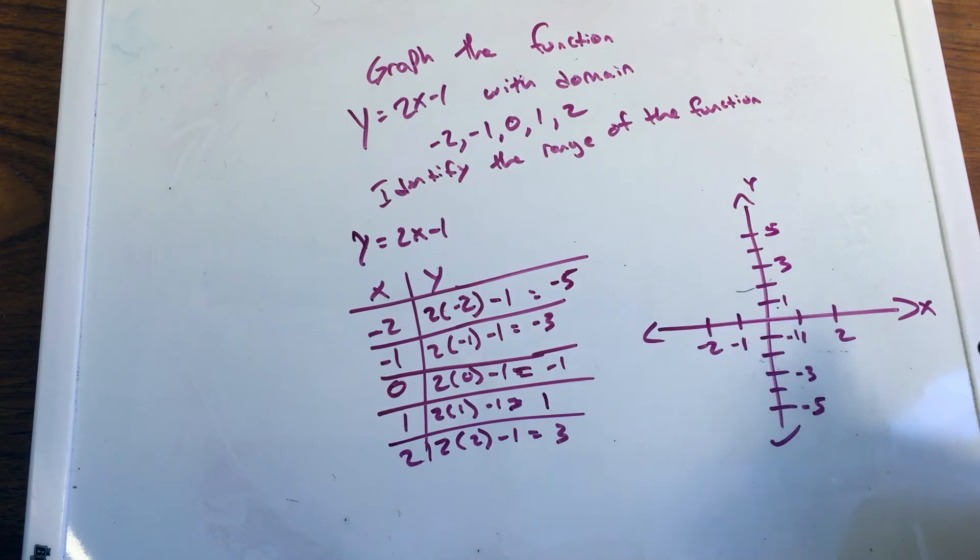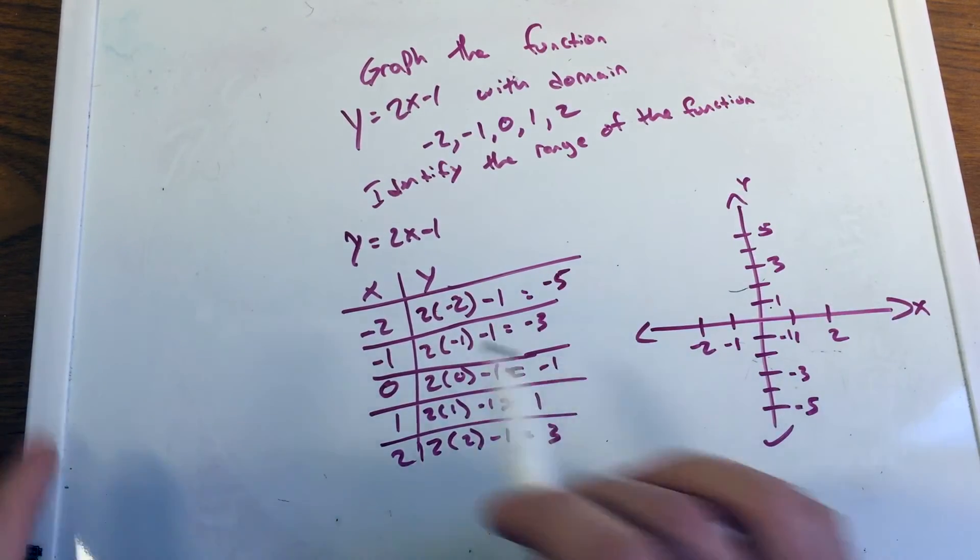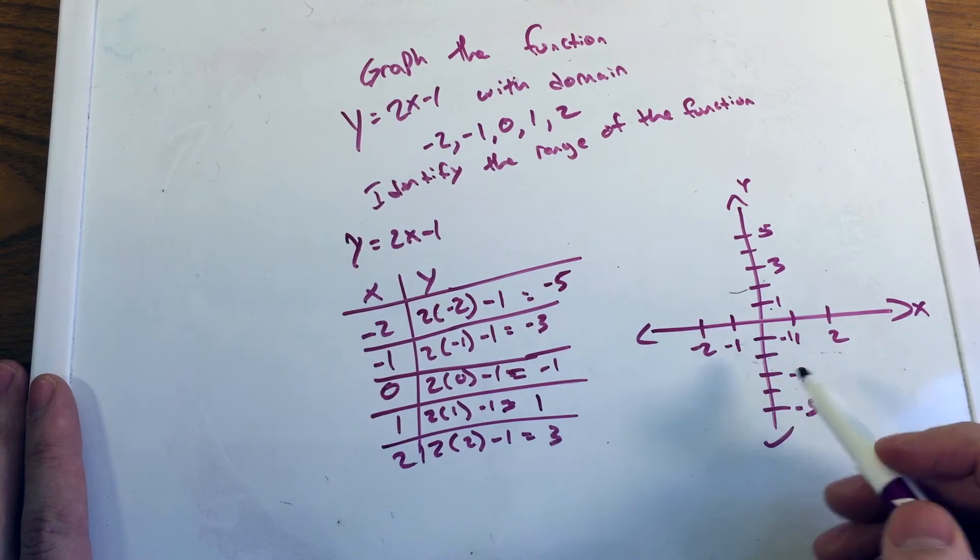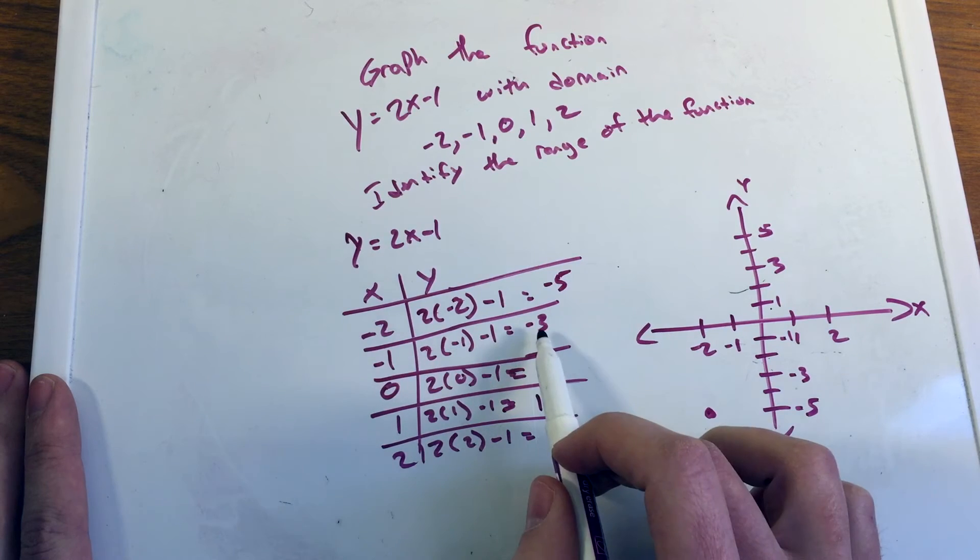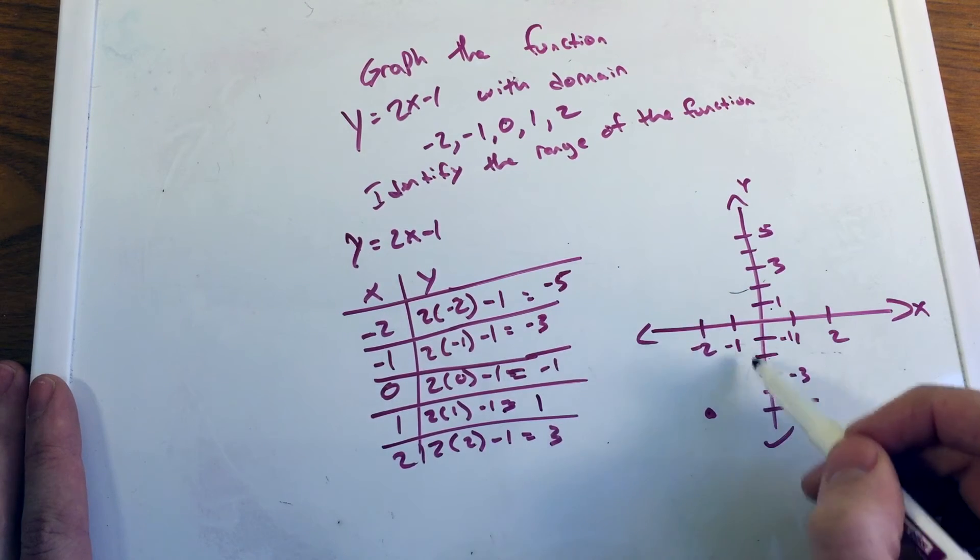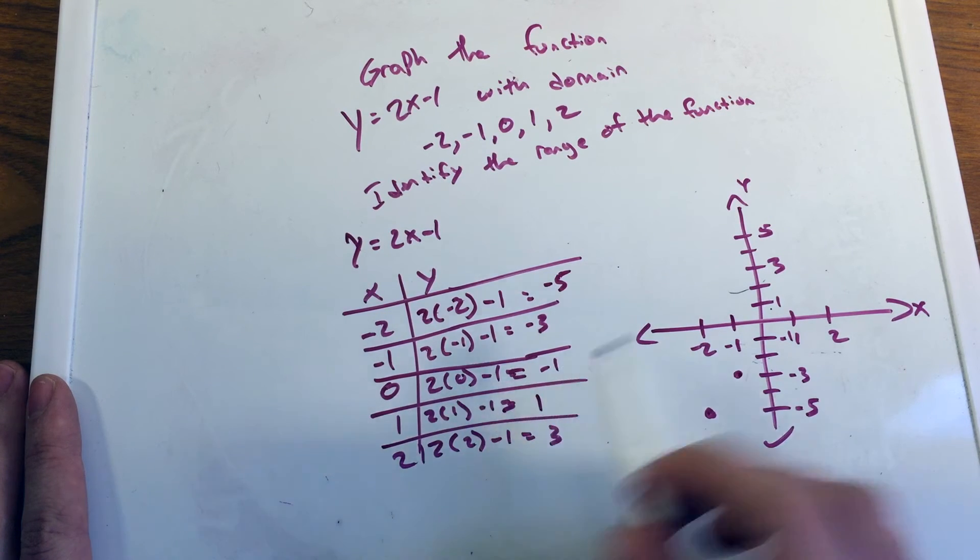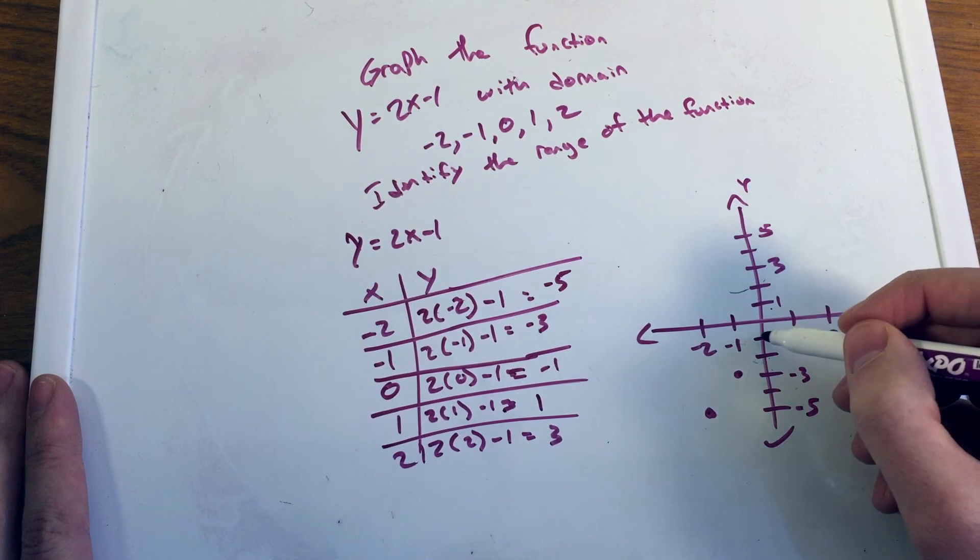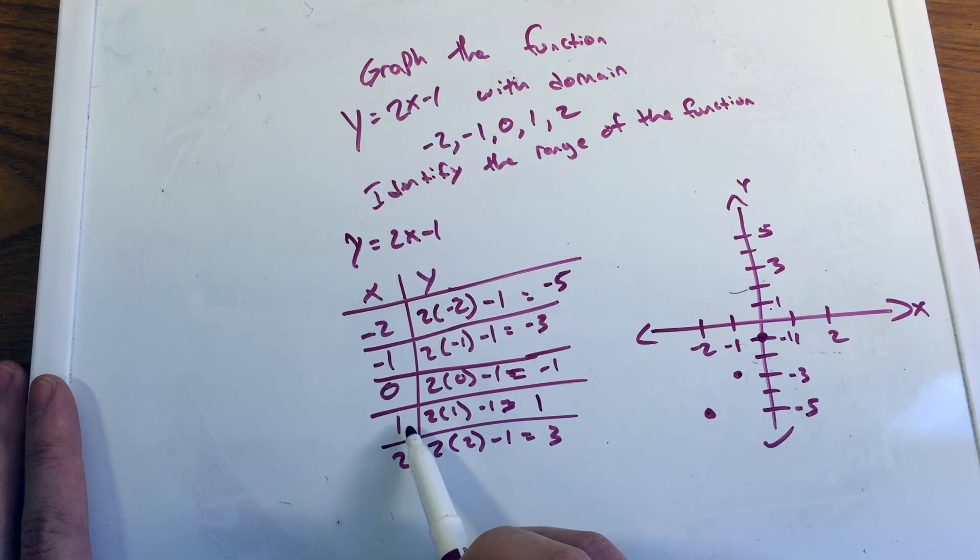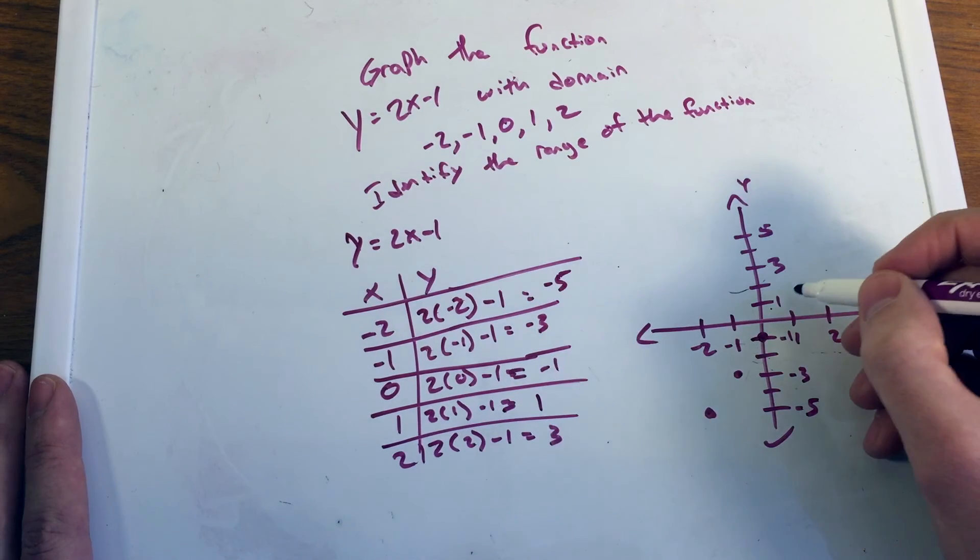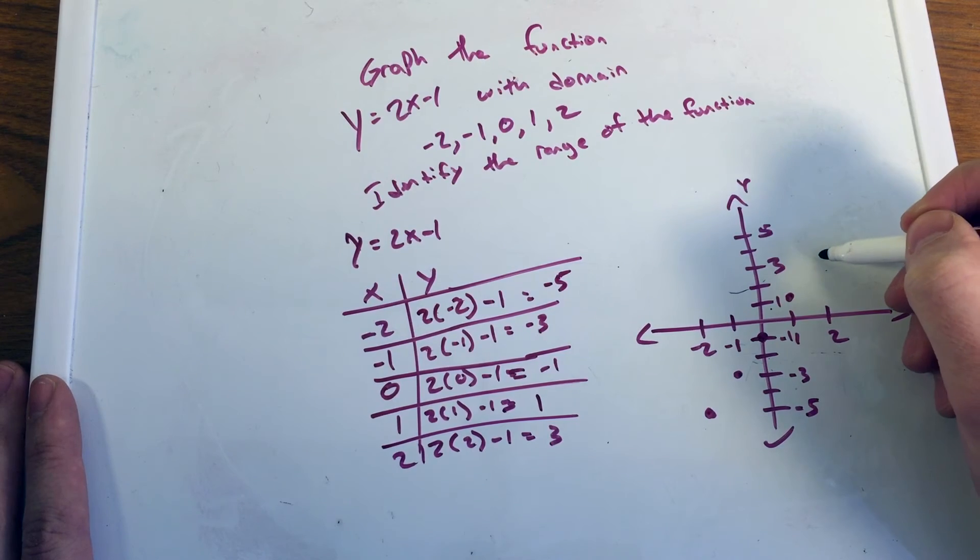So now we're going to be plotting these points here to see where they are in our graph. Well, I have an x value of negative 2, a y value of negative 5. My first point is right here. I have an x value of negative 1, y value of negative 3. So I have negative 1, 3, as such. I have an x value of 0, a y value of negative 1, right there. And I have an x value of 1, a y value of positive 1, as such. And an x value of 2 and a y value of 3. Here we are.